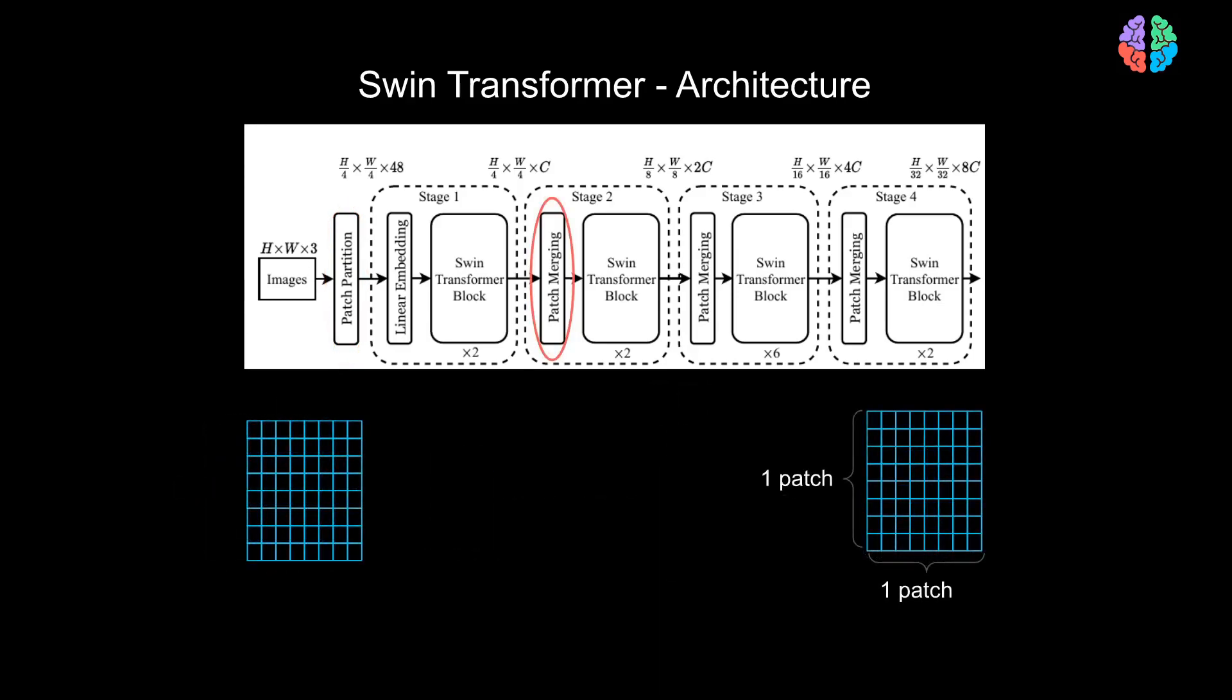Let's look at patch merging before looking into the main contribution of the paper which is Swin Transformer block. Let's again look at a simple image composed of 8 by 8 pixels. Each patch in the image is a 4 by 4 pixel.